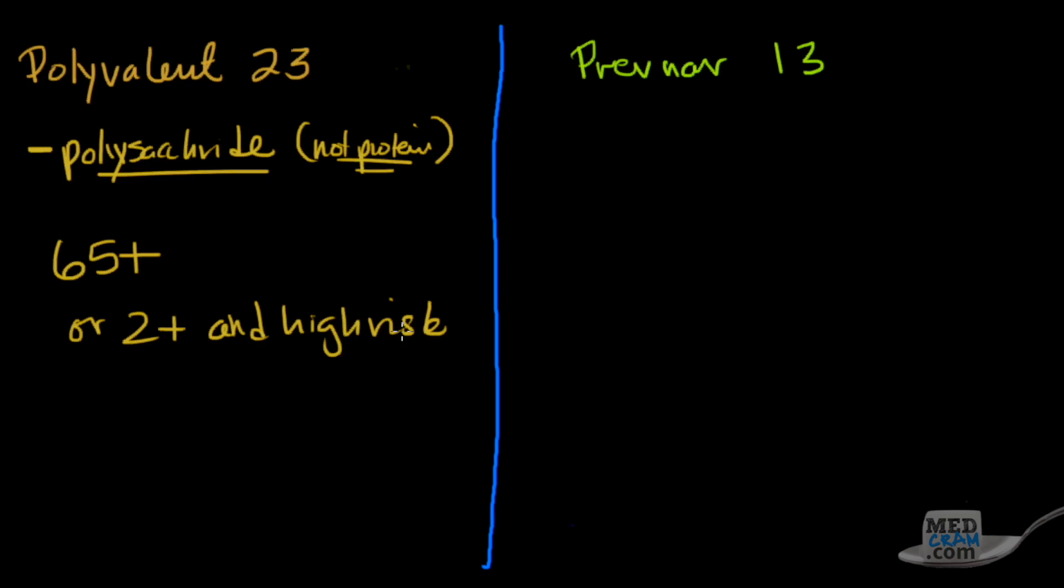What do I mean by high risk? These are people who are high risk at having pneumococcal disease, such as people with sickle cell disease, HIV infection, or other conditions which can make them immunocompromised. The PPSV23 or polyvalent 23 is also recommended for people who are 19 to 64, before they get to 65 years of age, if they smoke or if they have asthma. So there still is a role for the polyvalent vaccine.